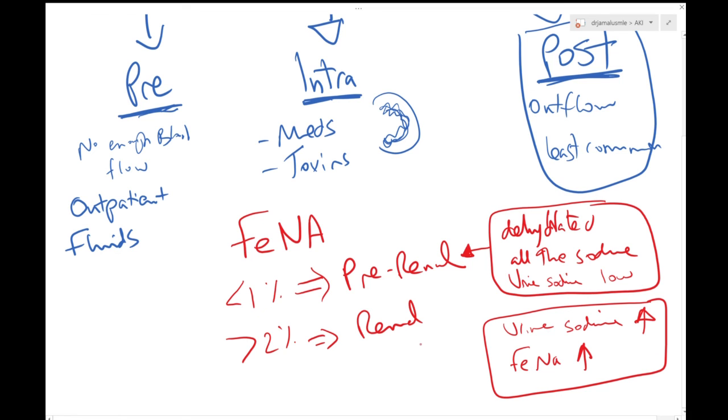Now always remember that if someone is on diuretics, you cannot use the FeNa. And why is that? Because when you use diuretics you will be throwing more sodium in your urine, and this is how the diuretics work. So if someone is already on diuretics and they come in with AKI, you can say I don't really know if it's pre-renal or intrarenal. And in this case they will use something called FE urea, which is basically the fractional excretion of urea.